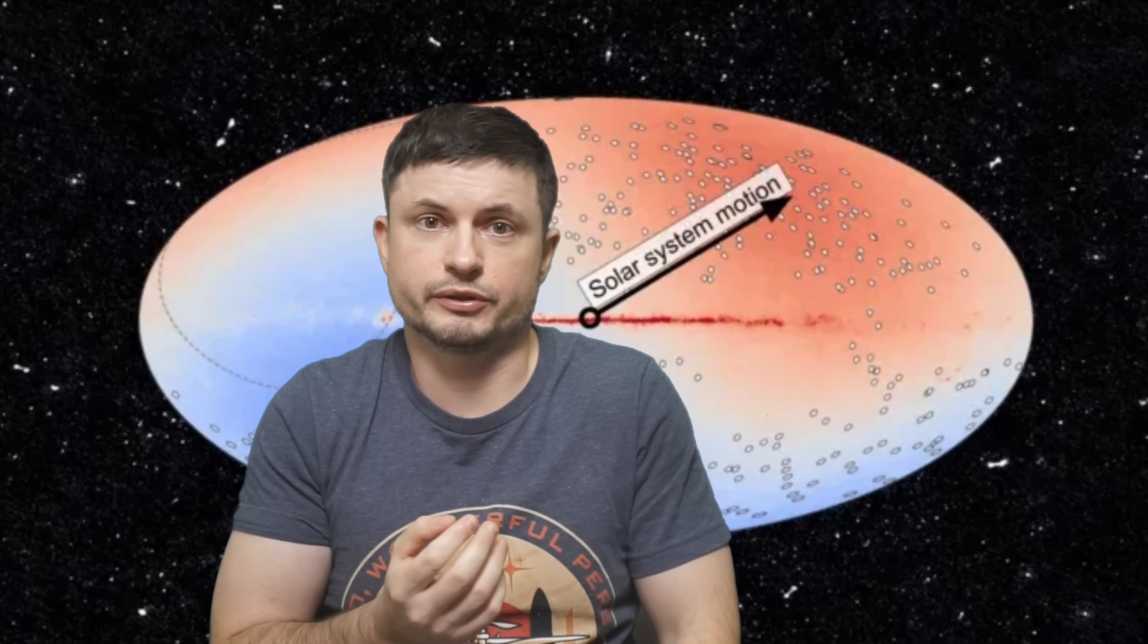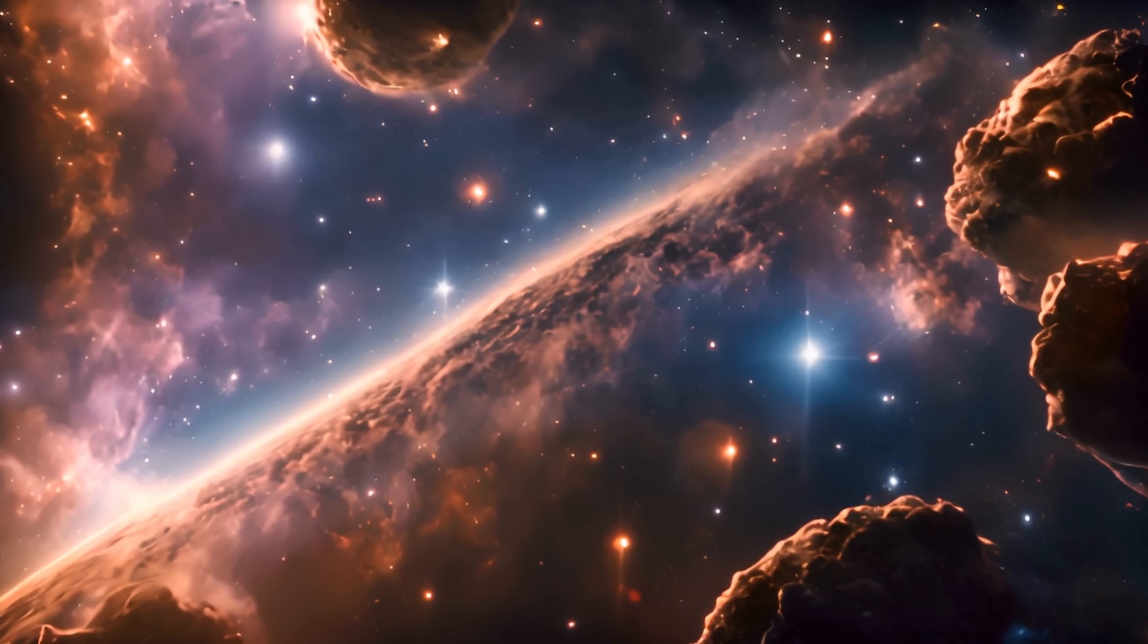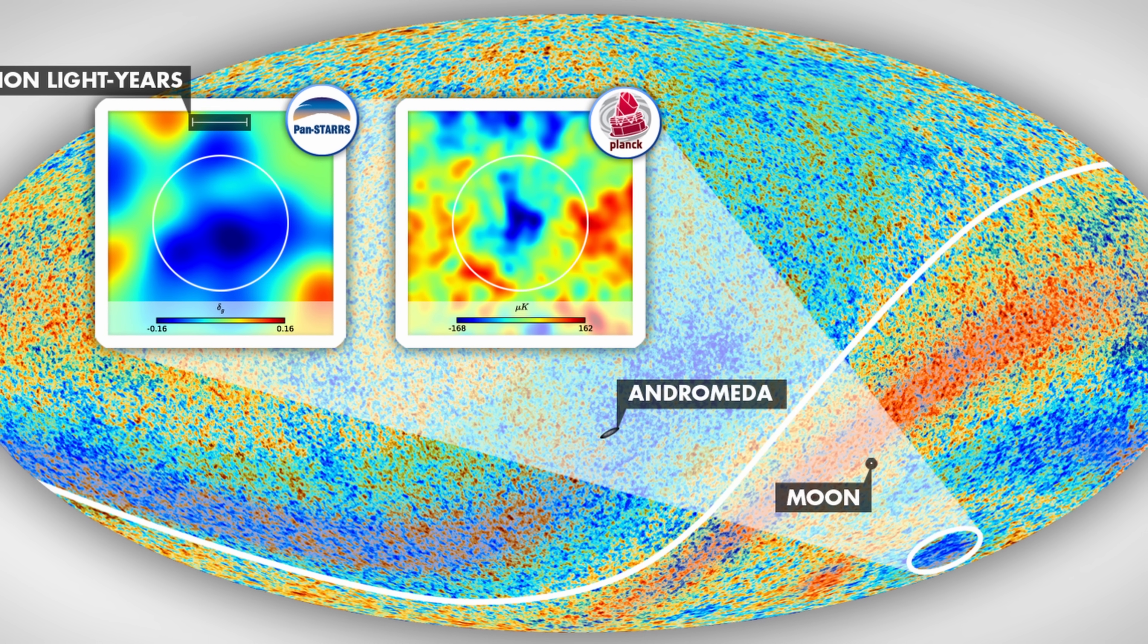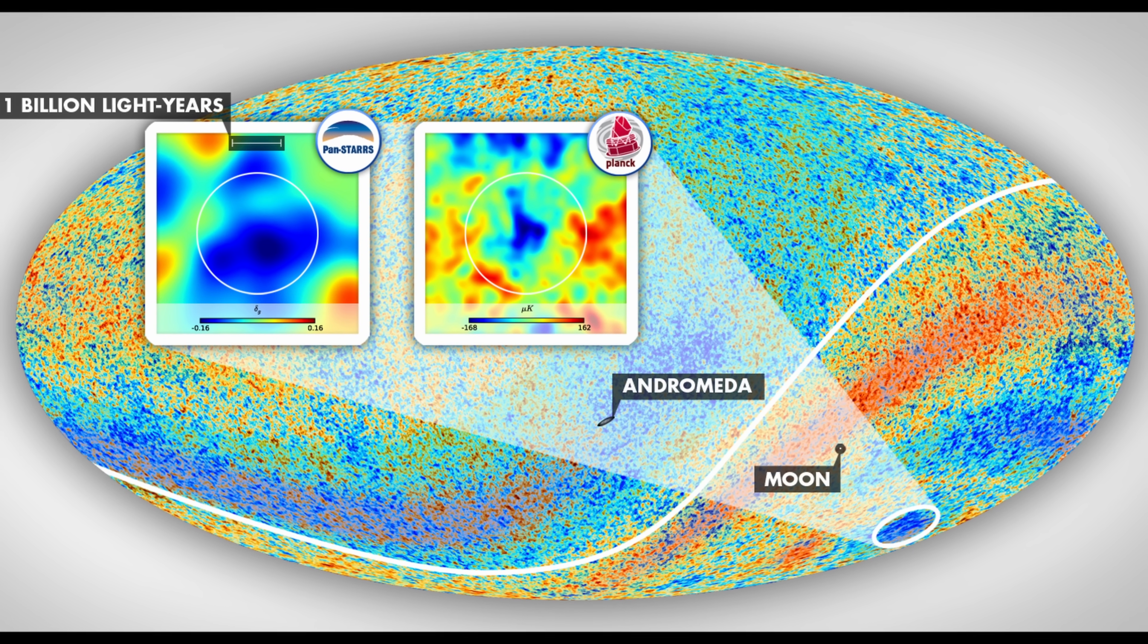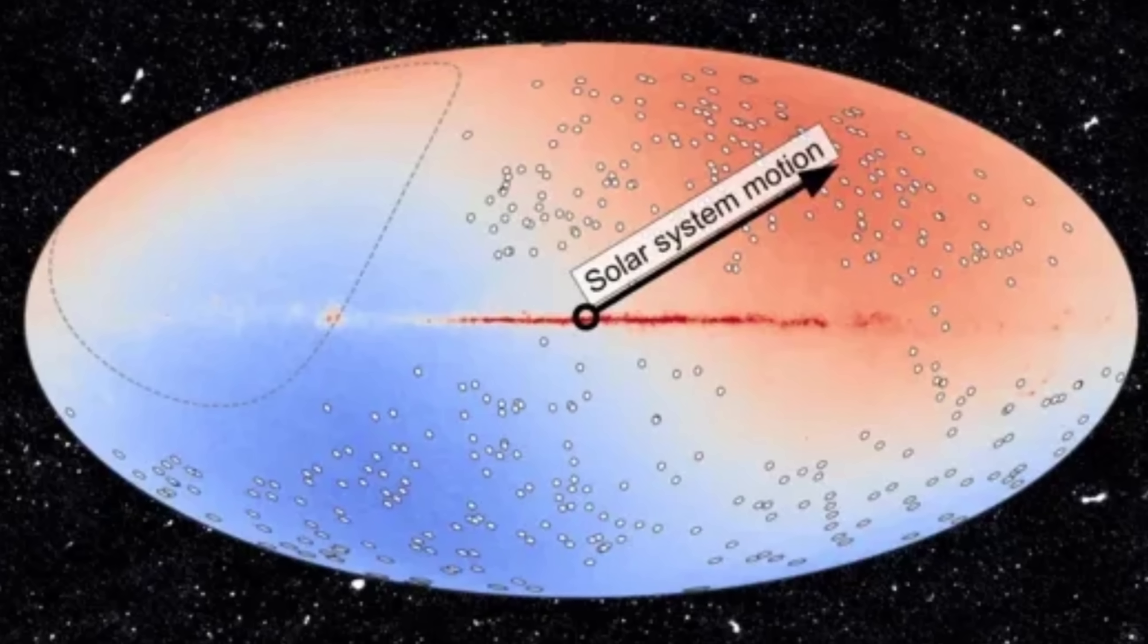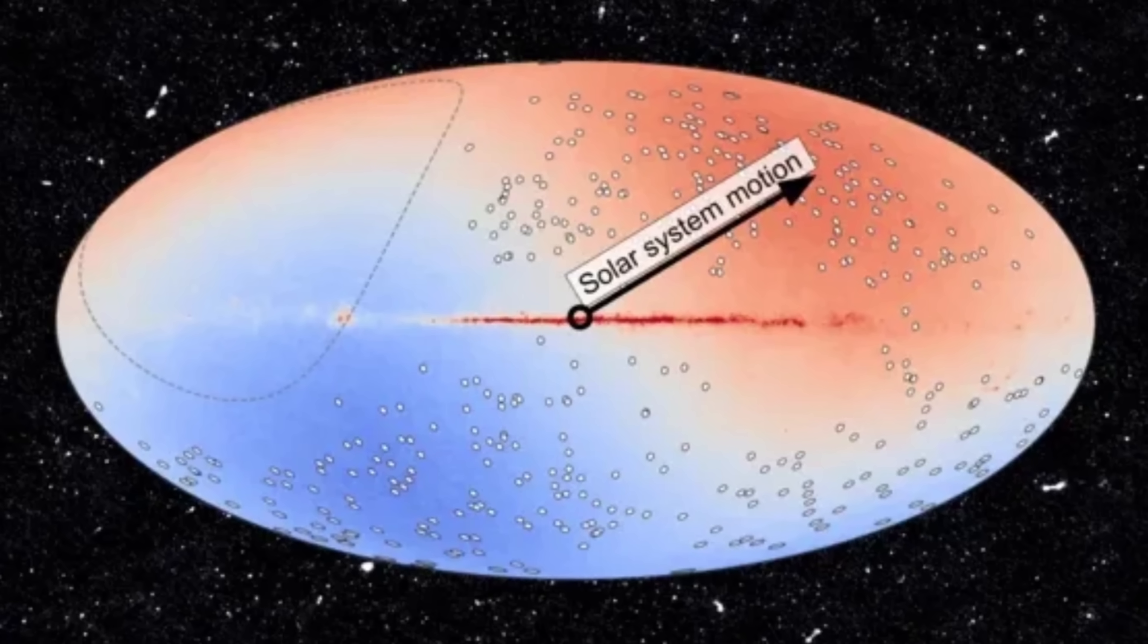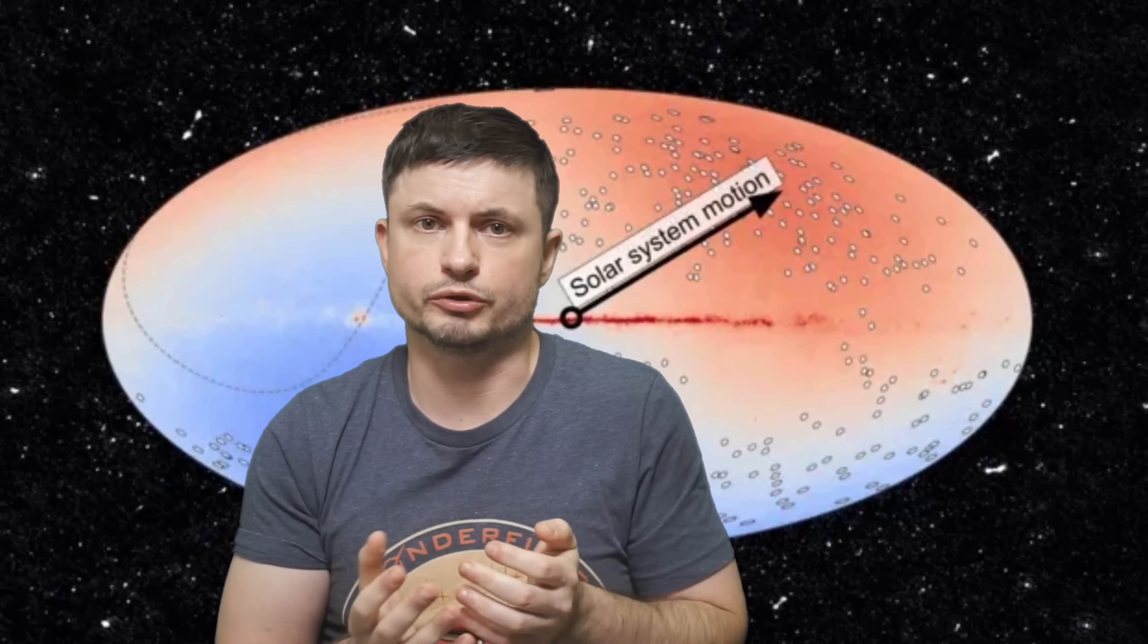And so we're left with two conflicting fundamental measurements. The cosmic microwave background that's been used to define the universal rest frame tells us we're moving at 370 km per second, but observations of distant radio sources suggest we're moving at almost 1400 km per second. And currently that makes no sense. So essentially this reminds us that there's still so much more to discover and we still don't really understand our place in the cosmos.